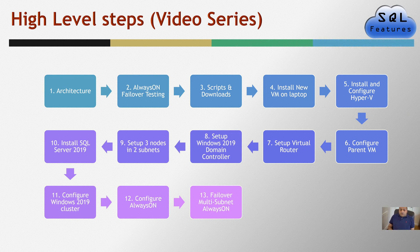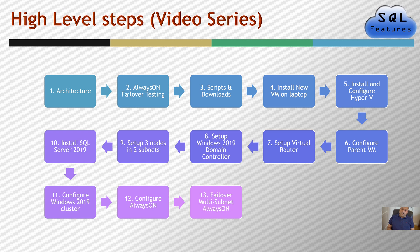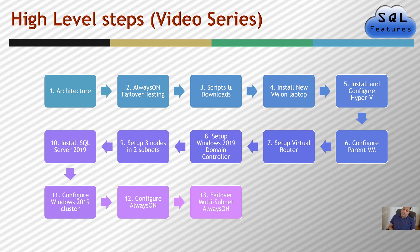For high-level steps, this video series runs about 13 videos. First is architecture, which we're discussing now. Then the next video will do a complete failover testing walkthrough for a 3-node multi-subnet Always On. After that, the third video covers scripts and downloads. Then we'll install a VM on the laptop, configure Hyper-V, create the parent disk, set up a virtual router, set up the Windows domain controller, set up the nodes, install SQL 2019, configure the cluster, configure Always On, and finally perform multi-subnet failover cluster testing — all failovers done alongside me.